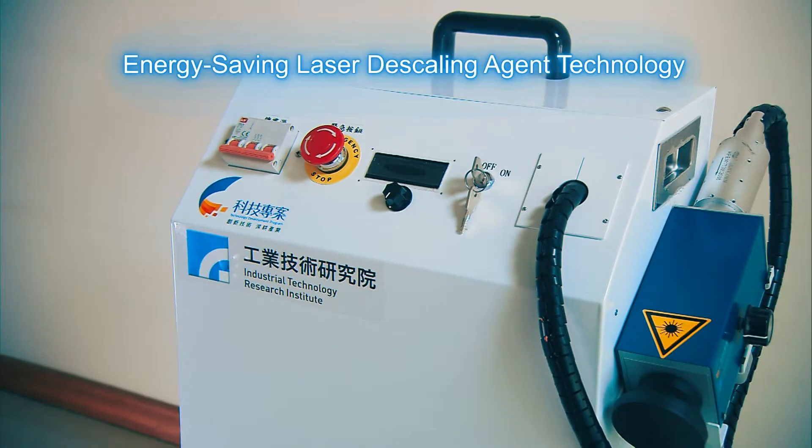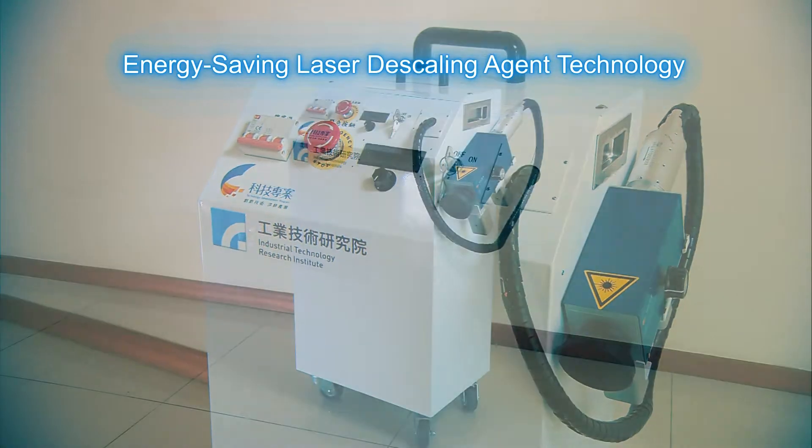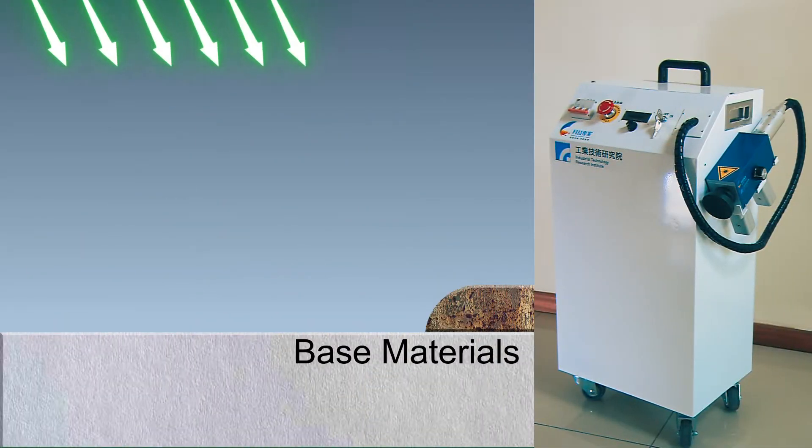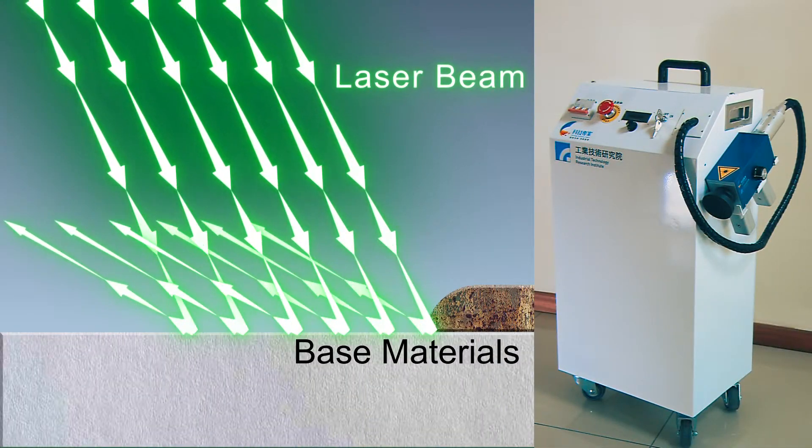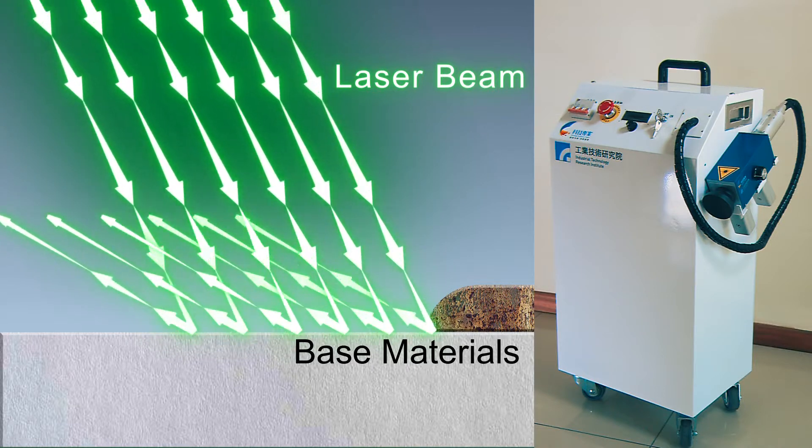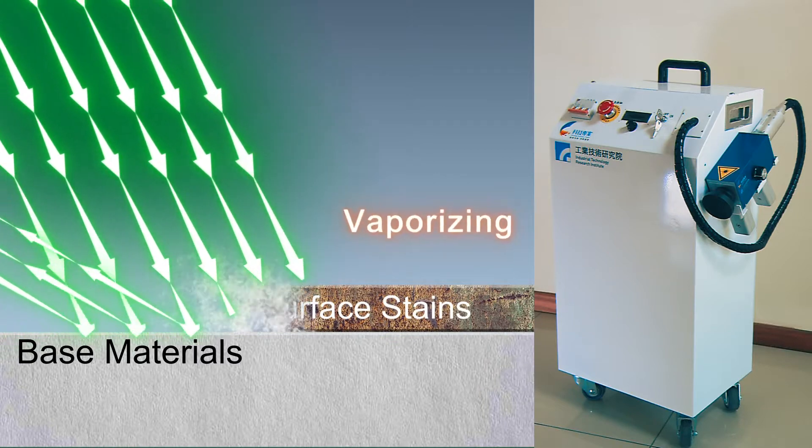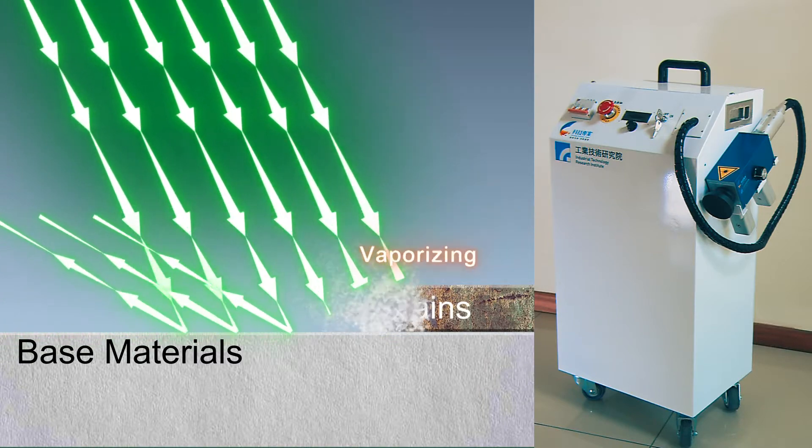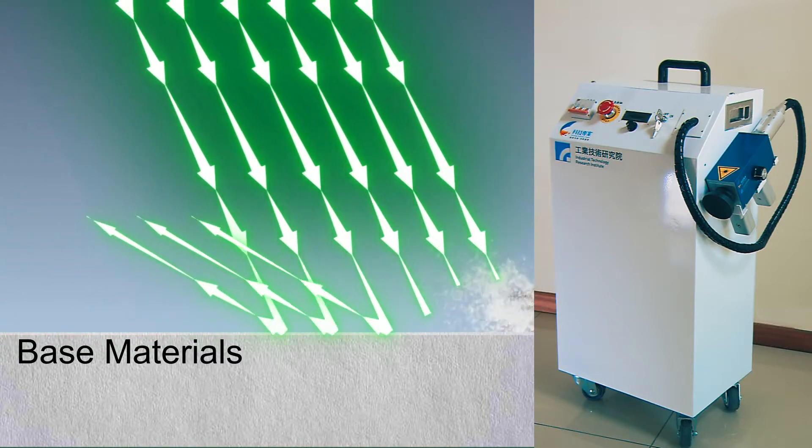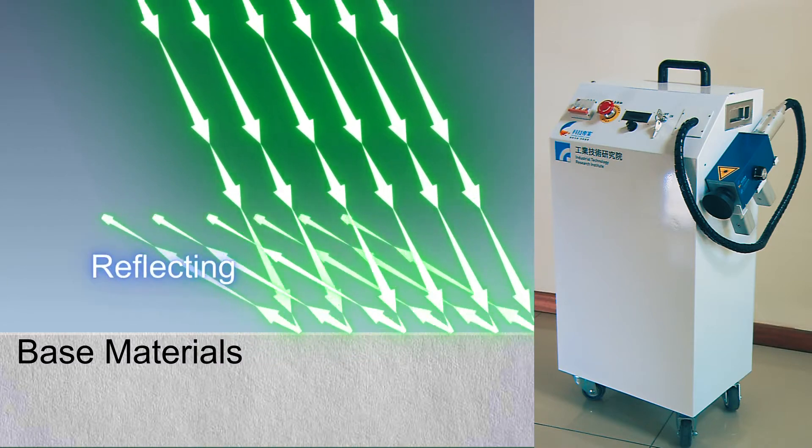E-Tree's Energy Saving Laser Descaling Agent Technology employs picosecond and nanosecond laser technology. Long and short pulse lasers with intense pulse light can increase the laser absorption rate. Stains or rust from metal products can be instantly vaporized by high energy to achieve high-efficiency cleaning without damaging the products.